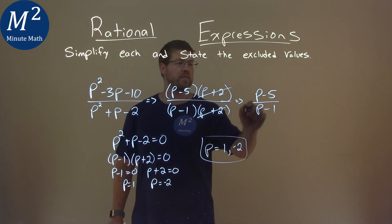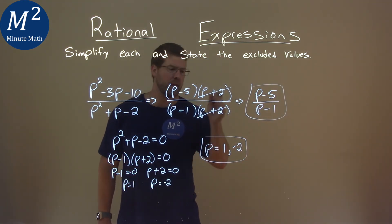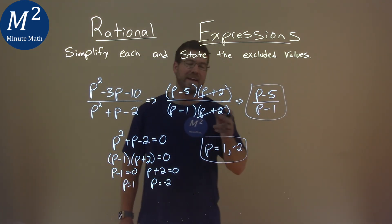And so my final simplified answer is p minus 5 over p minus 1. And the excluded values are 1 and negative 2.